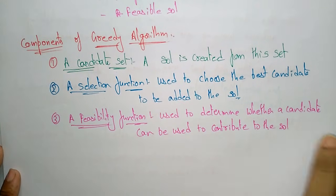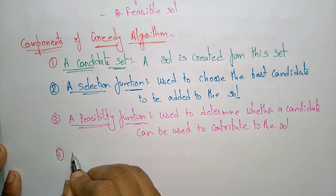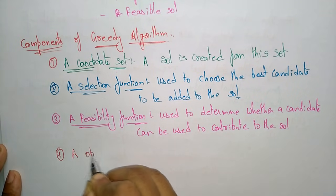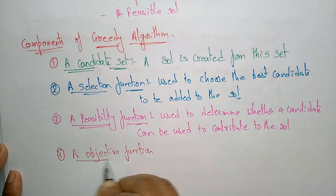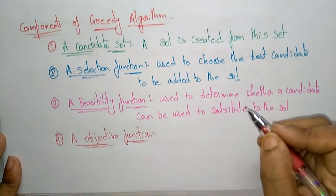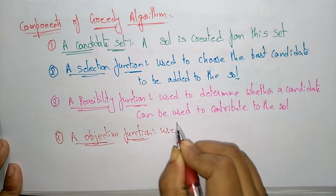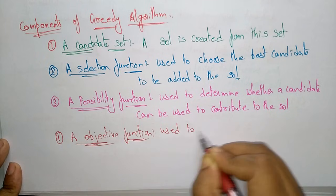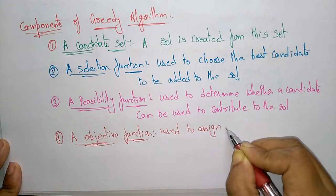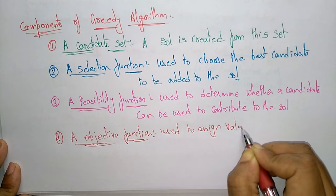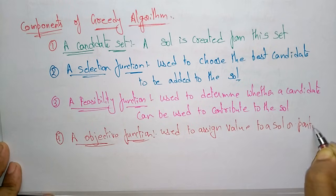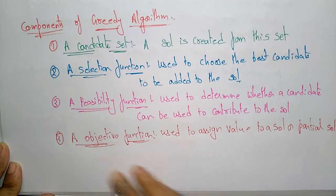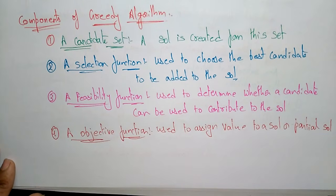The fourth component is the Objective Function. The objective function is used to assign a value to a solution or a partial solution, whether it is a complete or partial solution.